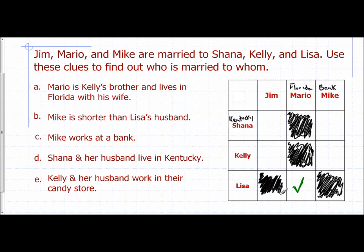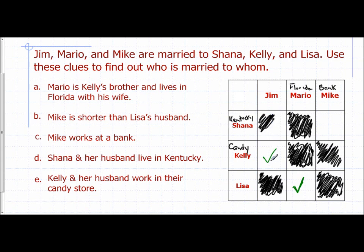Now I need to figure out: is Jim married to Kelly, or is Mike married to Kelly? We're told Kelly and her husband work in a candy store. Since Mike works at the bank, Mike is not Kelly's husband. That means Jim is Kelly's husband, so Jim cannot be Shayna's husband. Once I place that check mark, Jim and Kelly are confirmed as married.